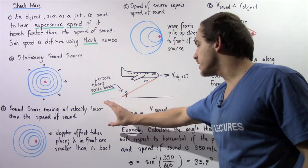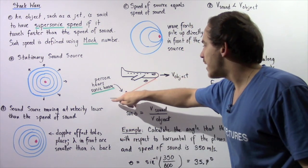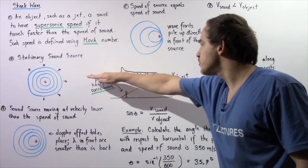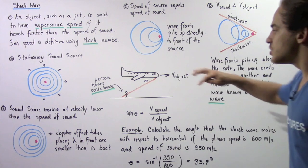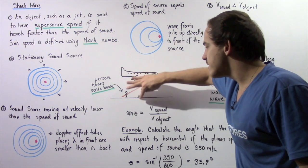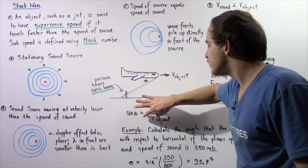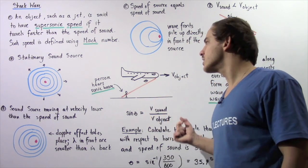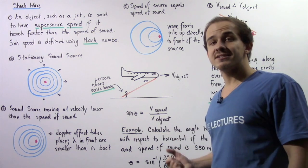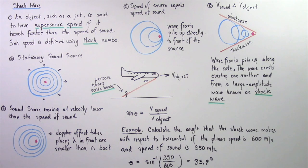Now, we can use the following equation to calculate the angle that the shock wave makes with respect to the x-axis along which the plane is traveling. So the sine of this angle is equal to the ratio of the velocity of the sound to the velocity of that object. And this only works as long as the velocity of the object is higher than the velocity of sound.